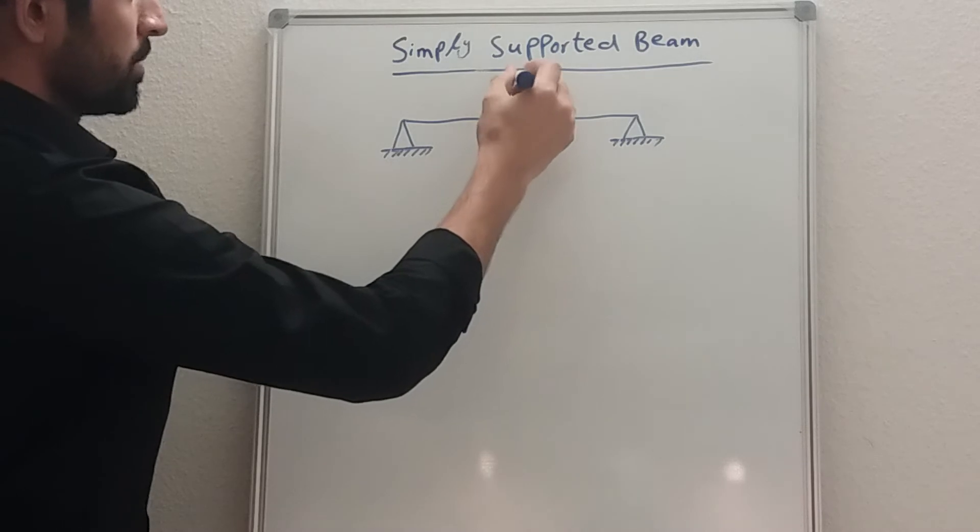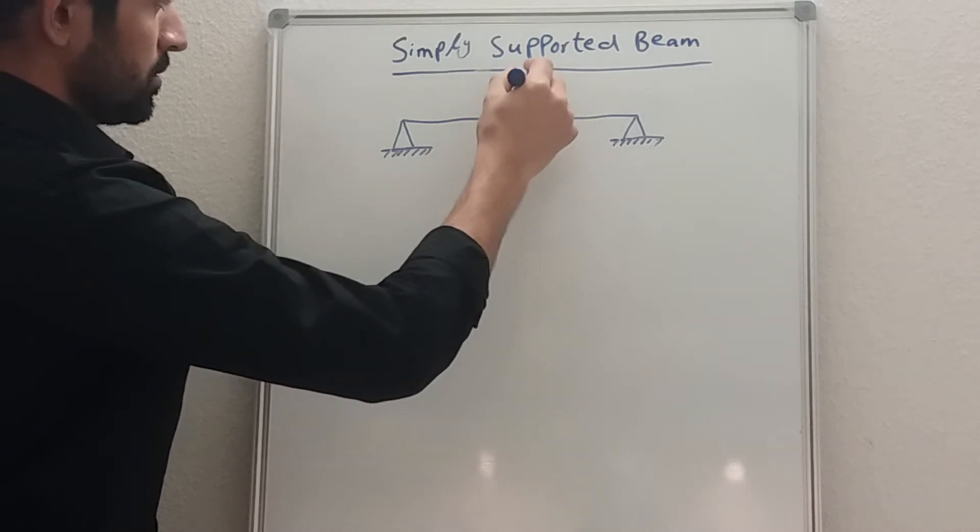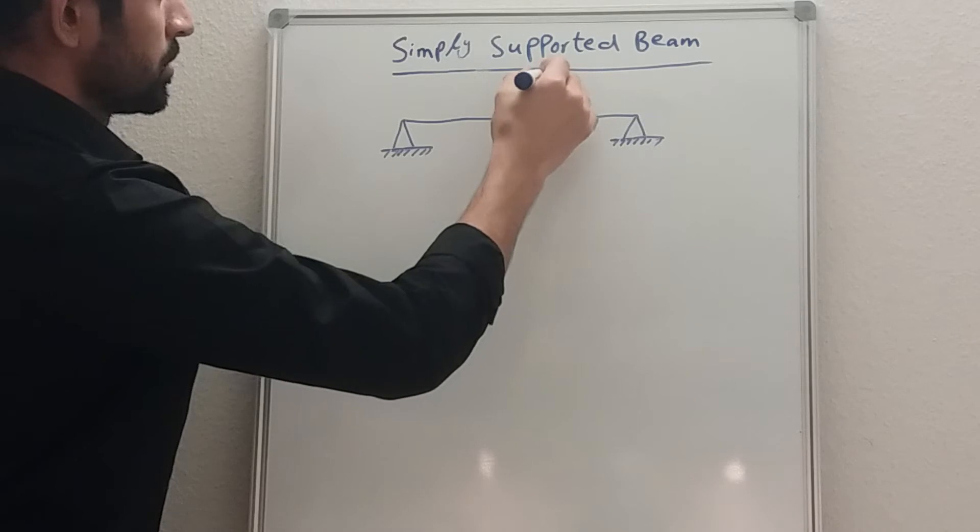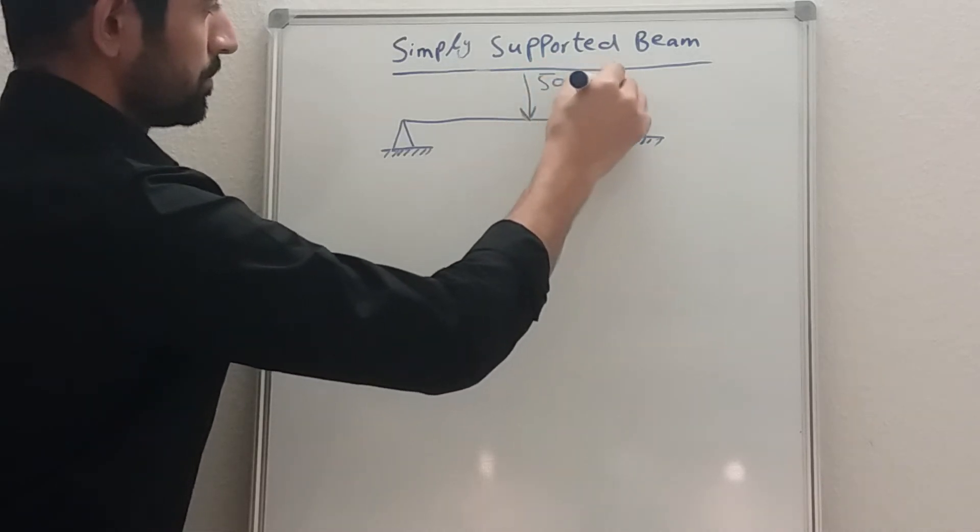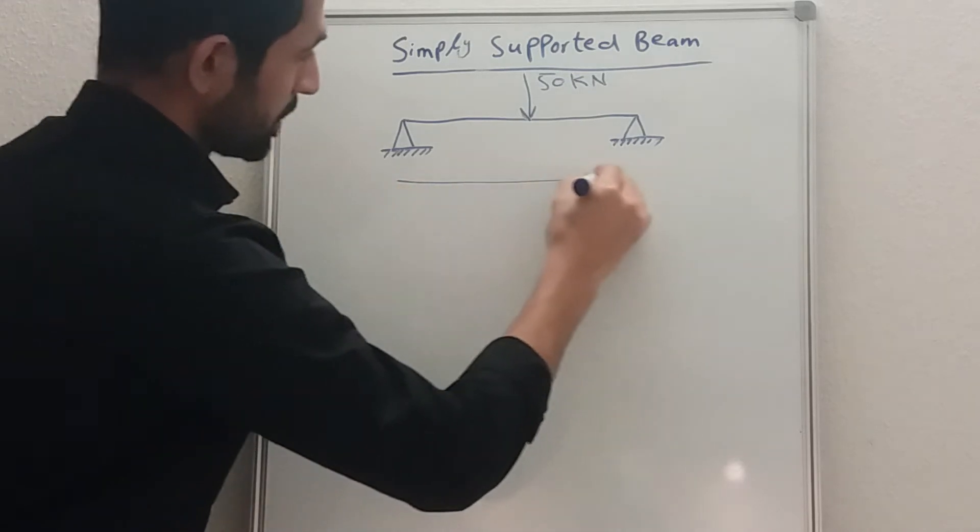Simply supported beam with load acting in the middle of the beam. So we have 50 kilonewton and the length of the beam is 5 meter.